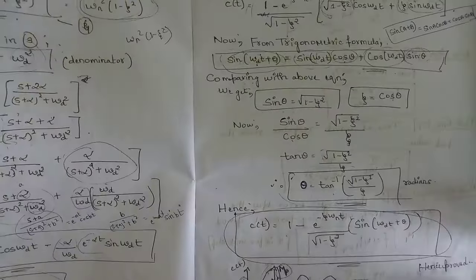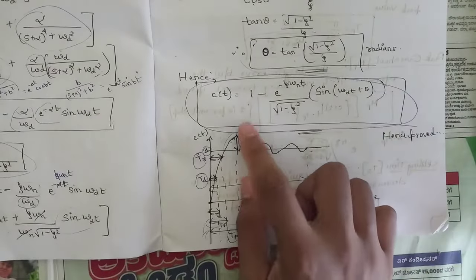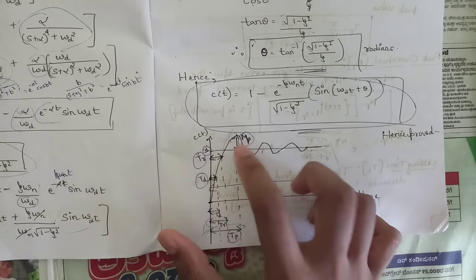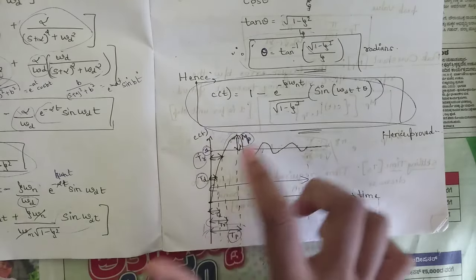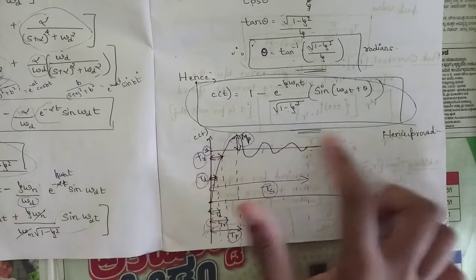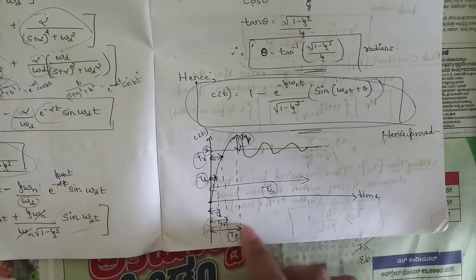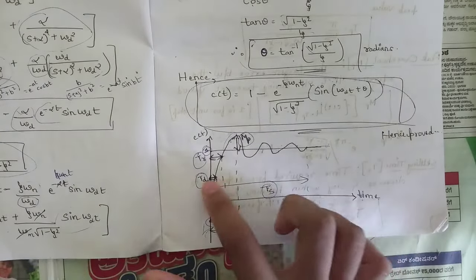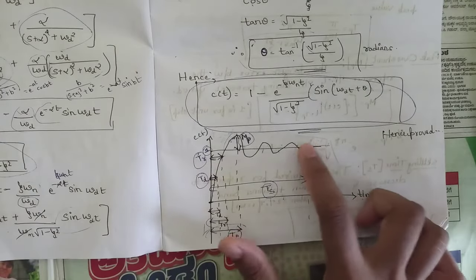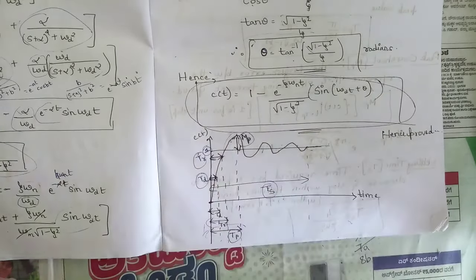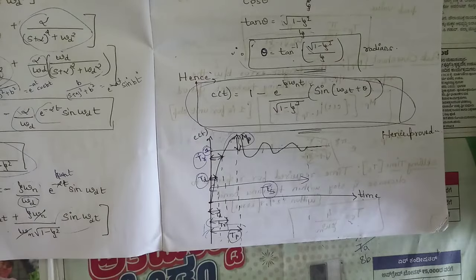The definitions and formulas for time domain specifications — delay time, rise time, peak time, peak overshoot, percentage peak overshoot, and settling time — have all been discussed. In the response plot, the peak overshoot is the point going above the final value, rise time is where the response reaches 90% of the final value, and settling time is where the output fully settles.